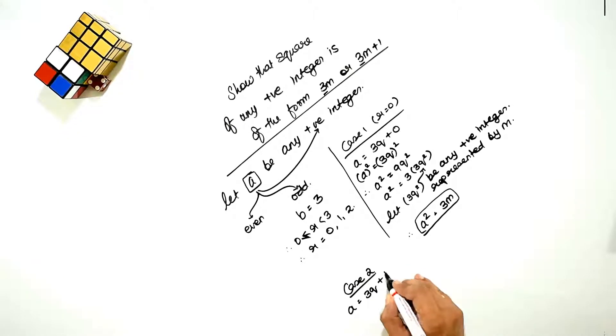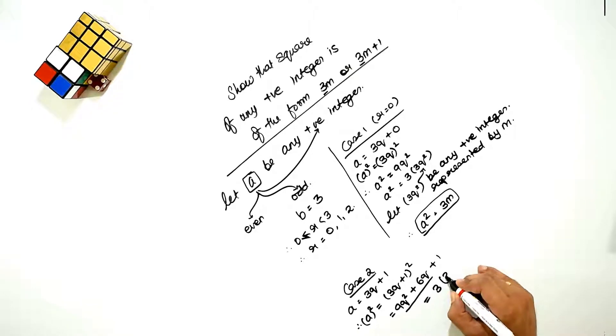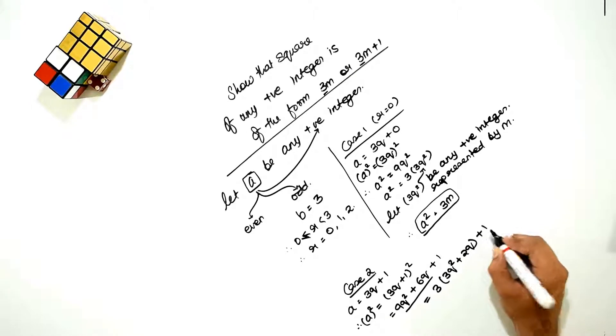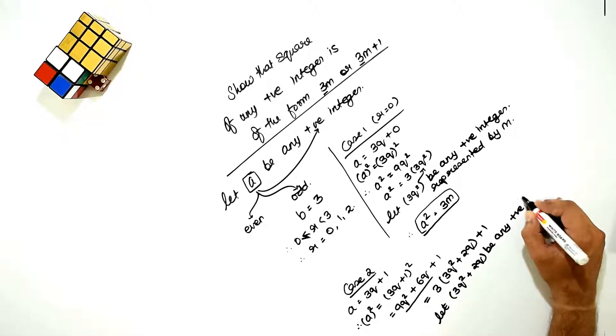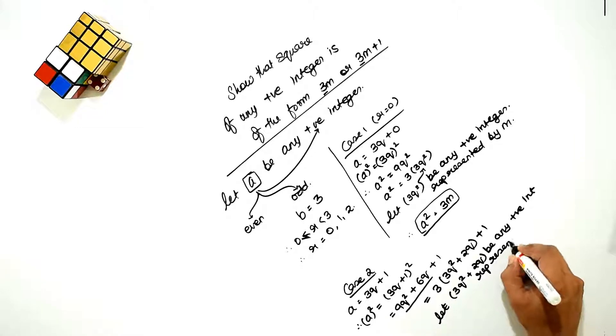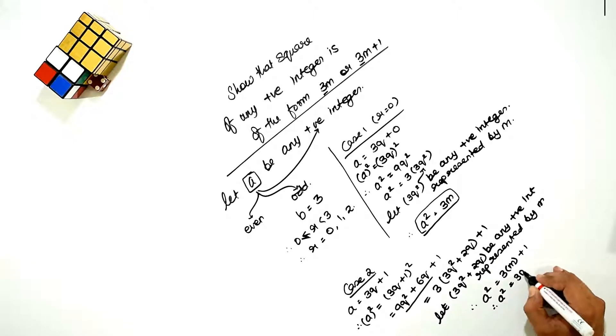Where a is equal to 3q plus 1. Now a square, which is 3q plus 1 whole square, using the expansion formula a square plus 2ab plus b square, which is 9q square plus 6q plus 1. If we take 3 as common, 9q square and 6q become 3 times (3q square plus 2q) plus 1. Now we assume that 3q square plus 2q, the value in bracket, is any positive integer represented by m. So a square is 3m plus 1. Therefore, a square is equal to 3m plus 1.